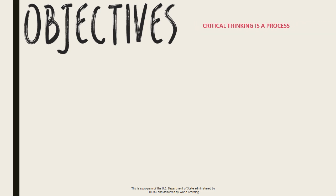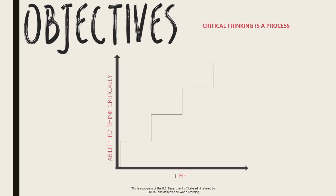Number three: critical thinking is a process. It develops over time and cannot happen as the result of just one lesson. As teachers, we should strive to include critical thinking objectives frequently in our lessons and build off of previous learning moments.